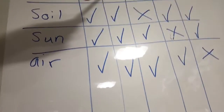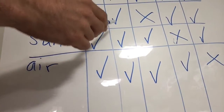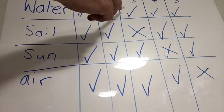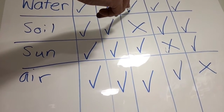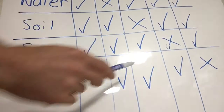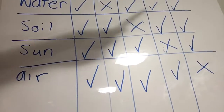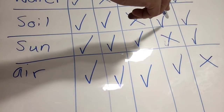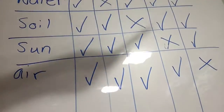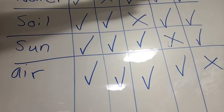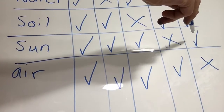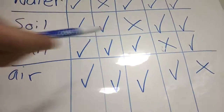The next plant will not get water, but will get soil, sun, and air. Plant four will get water and soil but will not get sunlight, and will get air. The last plant in experiment five will get water, will get soil, will get sun, and will not get air.